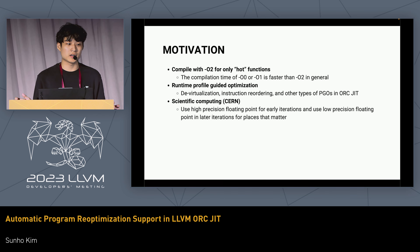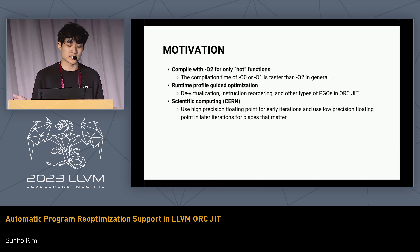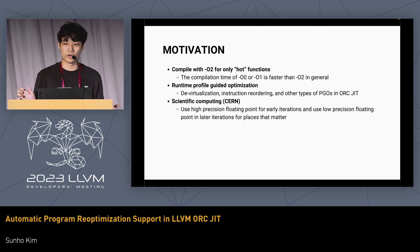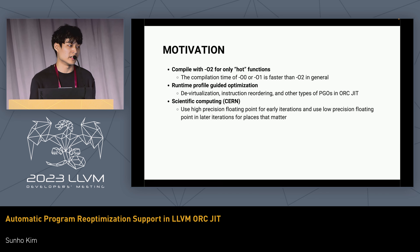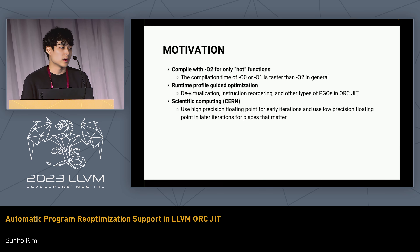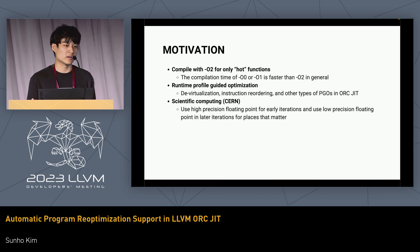There is also a more special motivation. Essentially, what we want to do is use high-precision floating points in the earlier iterations and low-precision floating points in later iterations. The observation here is that after a few iterations, the parameters have converged enough, so we want to run later iterations faster. You can notice that this is where we want to recompile the program while it is still running.